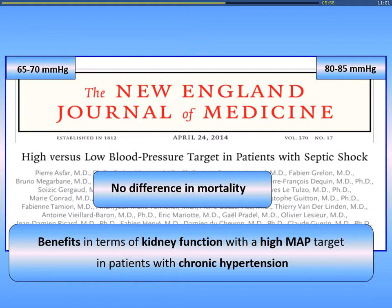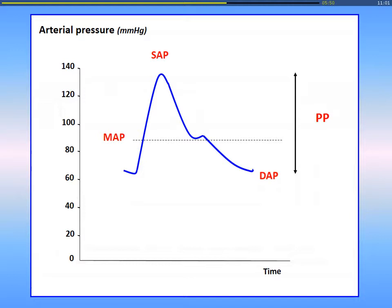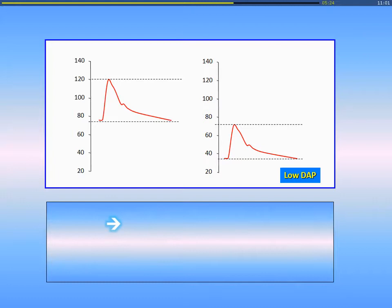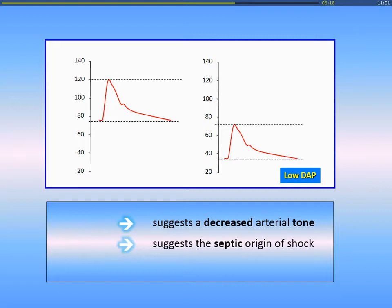What about the diastolic arterial pressure? This is also a very informative value because DAP is a good reflection of vasomotor tone. A low DAP is mainly due to depressed arterial tone. So if you observe a low DAP on the arterial pressure curve, this suggests decreased arterial tone, suggesting a septic — or possibly anaphylactic — origin of shock, and this incites you to administer vasopressors, sometimes urgently.